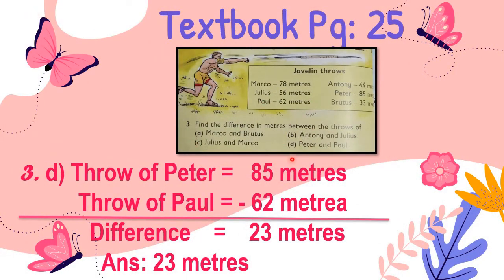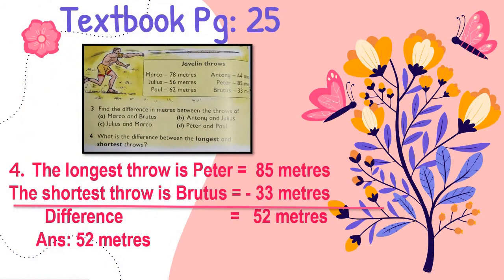Let's do question number D. You have to find out the difference in meters between the throws of Peter and Paul. The throw of Peter is 85 meters and the throw of Paul is 62 meters. Subtracting 62 from 85, the answer is 23 meters. The difference between Peter and Paul's throws is 23 meters.